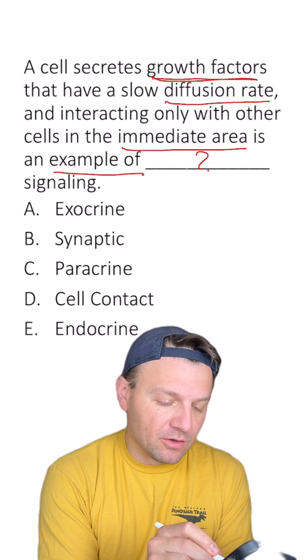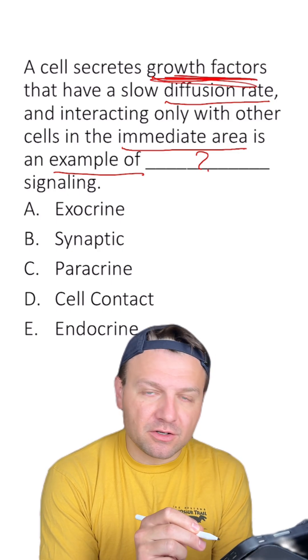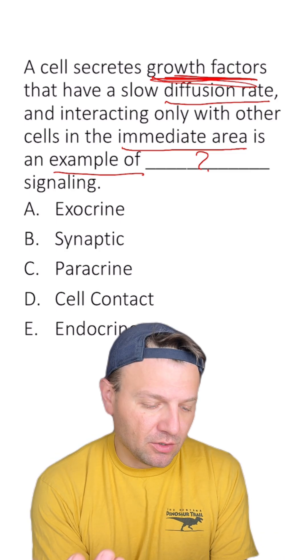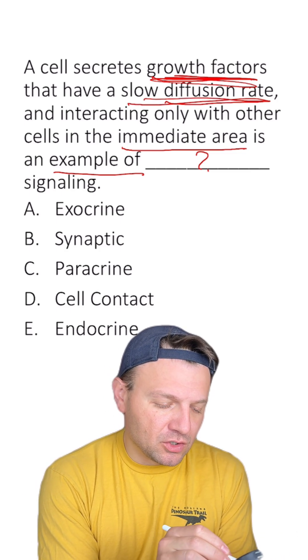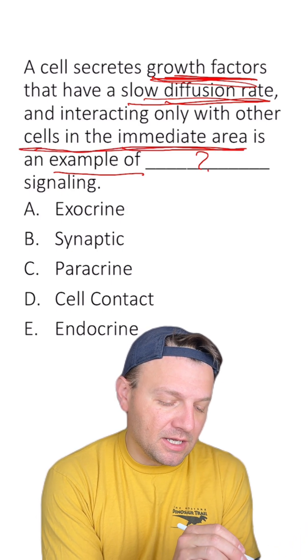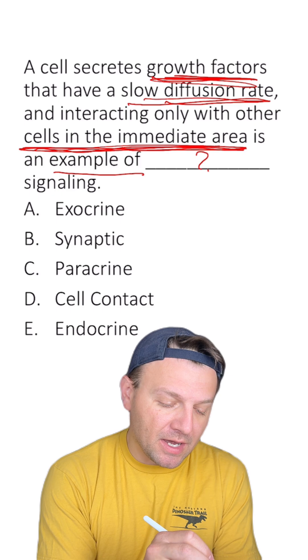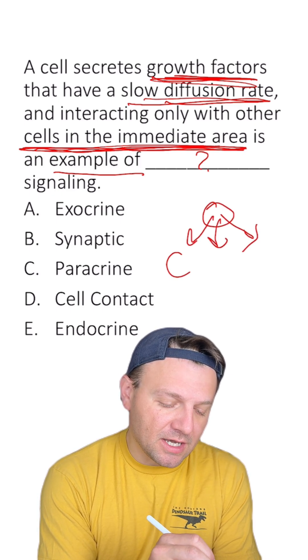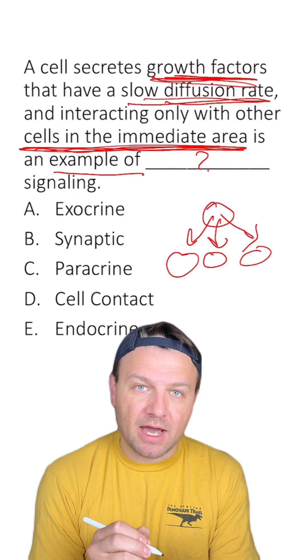A cell secretes growth factors. Again, growth factors are just ways that cells communicate with each other in order to initiate mitosis. They have slow diffusion rates. They interact with other cells in an immediate area. That means cells that are close by. You might have one cell that's going to send out signals to other cells that are close by.